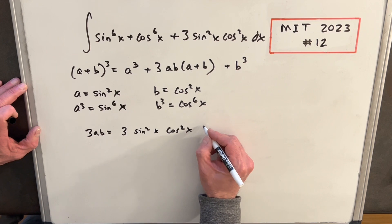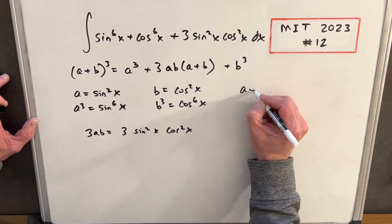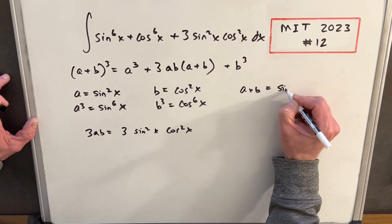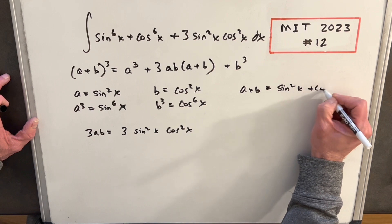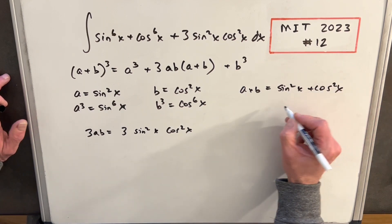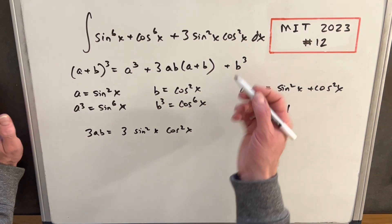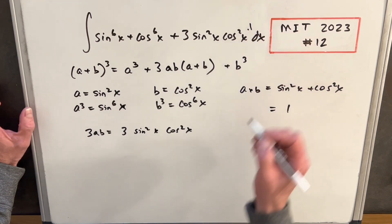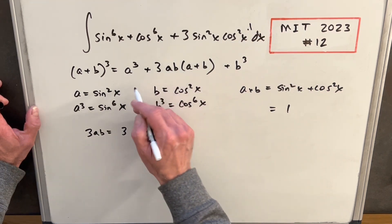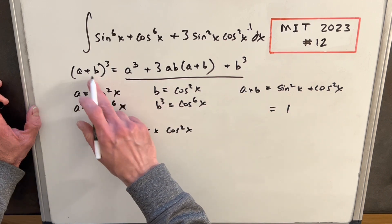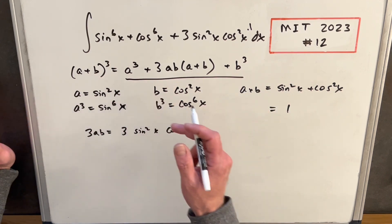What about this a plus b? Well, with that, a plus b is just sine squared plus cosine squared, right? But that's just 1. So therefore, we could just put a 1 in there, multiply it by 1, that's not going to change it.